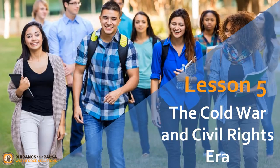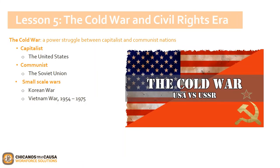We are almost done. We are now moving on to Lesson 5: The Cold War and Civil Rights Era. After World War II, there was ongoing conflict between capitalist and communist nations. Leading the capitalists was the United States and the communists was the Soviet Union — two superpowers. The Cold War was named as such because these two nations never engaged in direct combat. Even though they did not fight each other, there were smaller physical conflicts, including the Korean War and the Vietnam War.